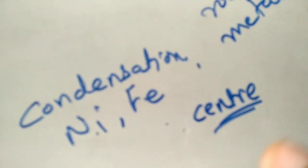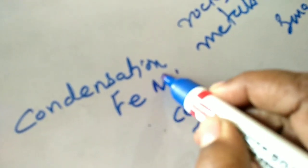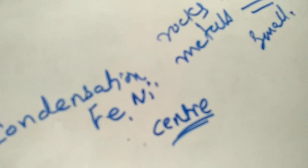The center of earth was formed as a solid core made up of iron and nickel. So the core of the earth was made up of iron and nickel.